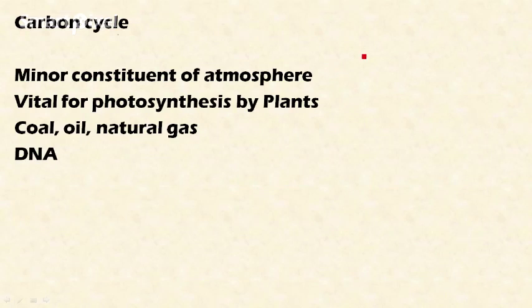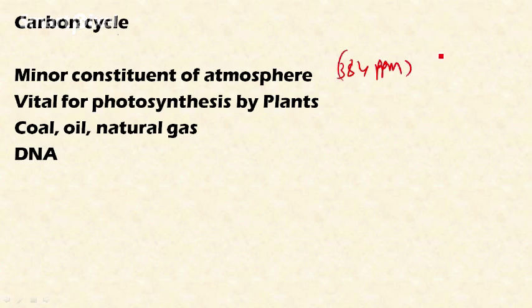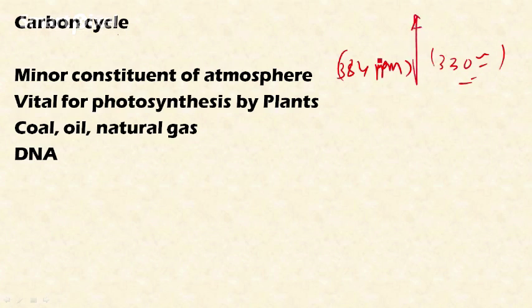The next topic is the carbon cycle. Carbon is a minor constituent of the atmosphere, with a concentration of about 384 ppm (parts per million). Before the industrial revolution, it was approximately 330 ppm. After the industrial revolution, contributions through fossil fuels — coal, natural gas — and other industrial processes increased the concentration of carbon in the atmosphere, representing human interference in the carbon cycle. Carbon is very important for photosynthesis in plants, upon which all life on Earth is sustained.